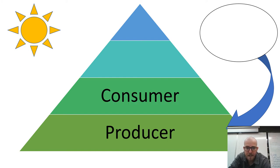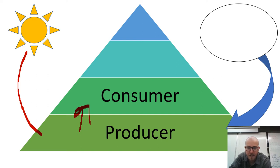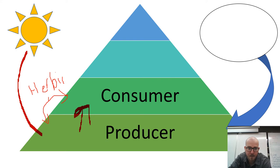Next we have consumers. So we have our producers getting their energy from the sun, and then they're passing their energy on up to the consumer. We have a relationship between the consumer and the producer — if the producer is a plant and the consumer is an animal, we have herbivory as their ecological relationship.